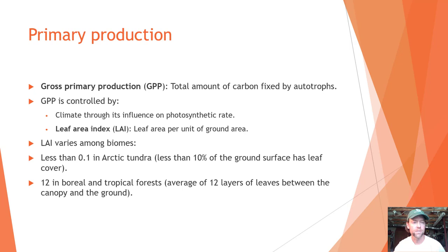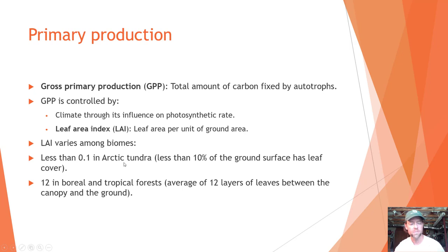GPP is controlled by a couple of different factors. One is climate, through its influence on the photosynthetic rate — depending on where you are on the earth there's more sunlight reaching the surface, and biological processes take place at a much higher rate at warmer temperatures. Another factor is the leaf area index: the leaf area per unit of ground area. In arctic tundra the leaf area index is 0.1, meaning less than 10% of the ground has leaf cover, while in boreal and tropical forests it equals 12 — meaning 12 layers of leaves between the top of the canopy and the ground.